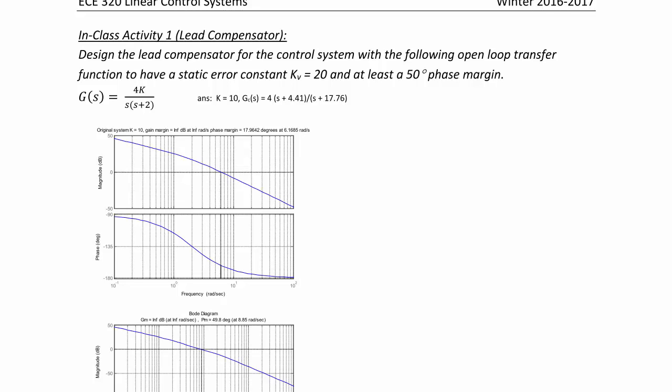In class activity 1. Design a lead compensator for the control system with the following open loop transfer function to have a static error constant kv equal 20 and at least a 50 degree phase margin. G of s is equal to 4k over s times s plus 2. I've given an example of the answers here so that we can analyze the plots before and after compensation.